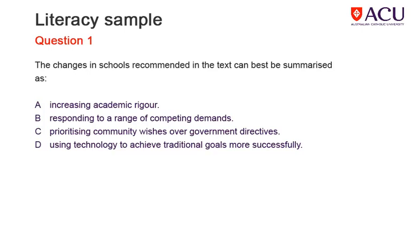Before we check the answers, I'd like to point out a key word in the question: 'summarised'. Look for repetition of ideas which are introduced in the first paragraph and then sustained and expanded upon in the rest of the article. It's about change — global, technological, social — responding to needs of students in this environment of change, and the impact on schools to meet the changing expectations of students. Work through the possible answers. Can A, B, C and D be found in the text? If yes, the answer has to be B, which covers all of the possibilities.